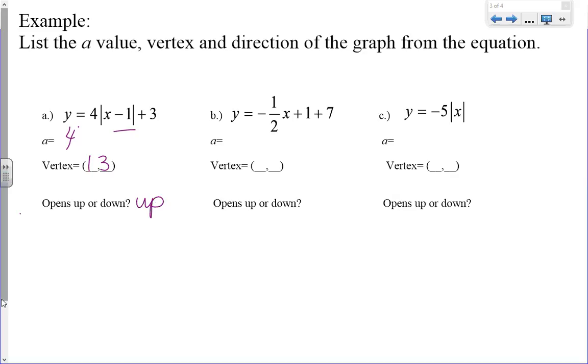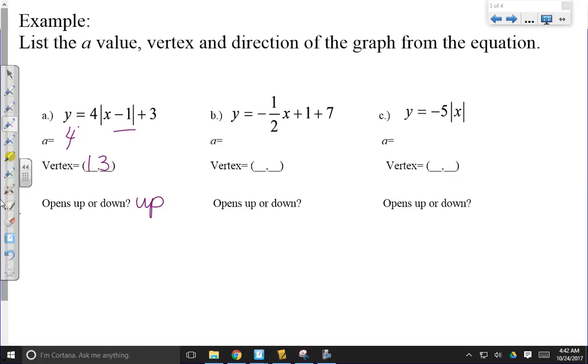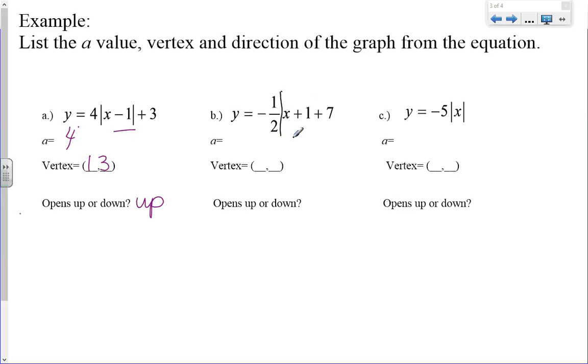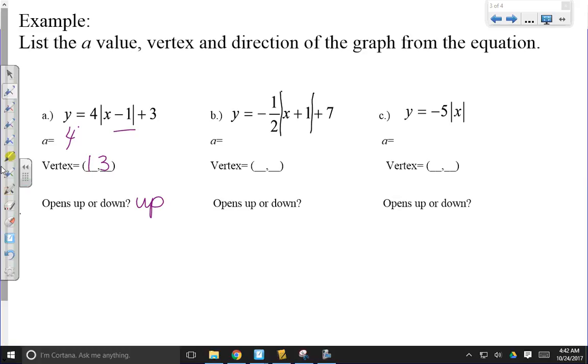It looks like on b that the absolute value brackets aren't showing up, so I'm going to draw those in. Hopefully they're already on your notes. So we have y equals negative 1 half times the absolute value of x plus 1 plus 7. So the a value is this negative 1 half.